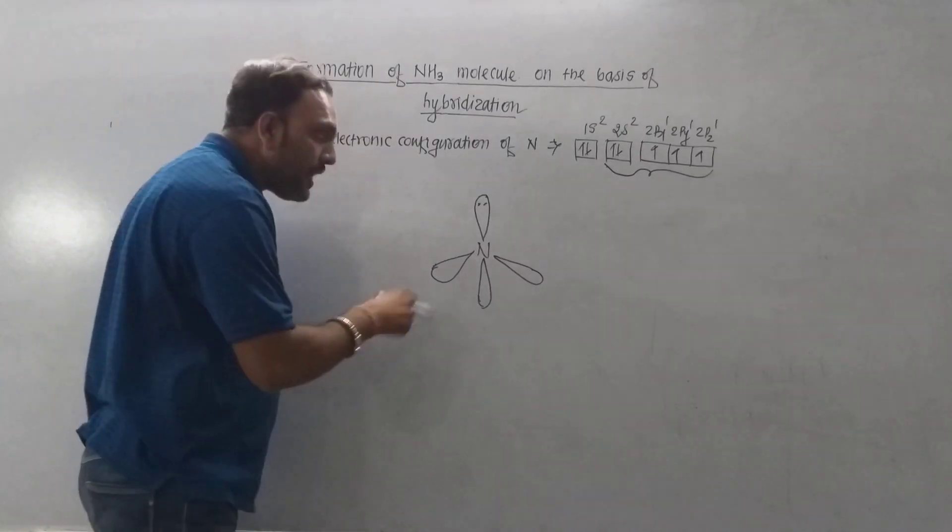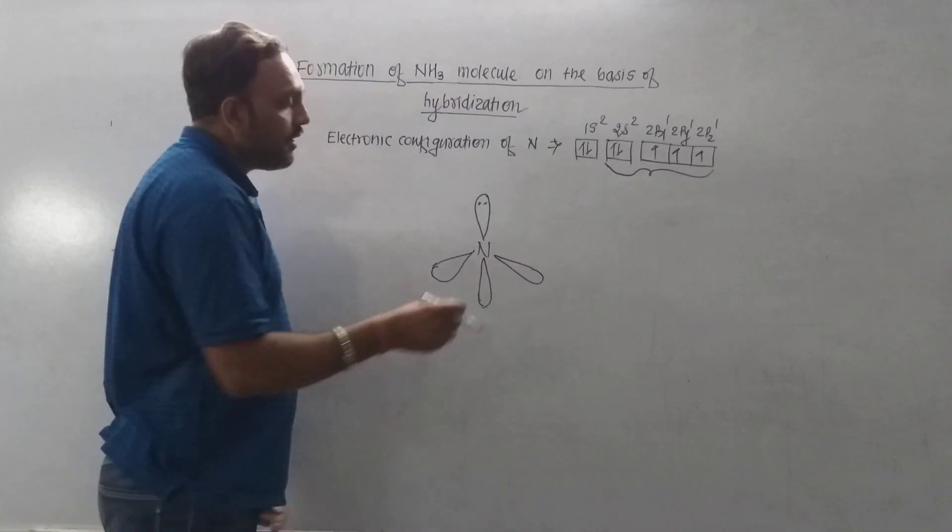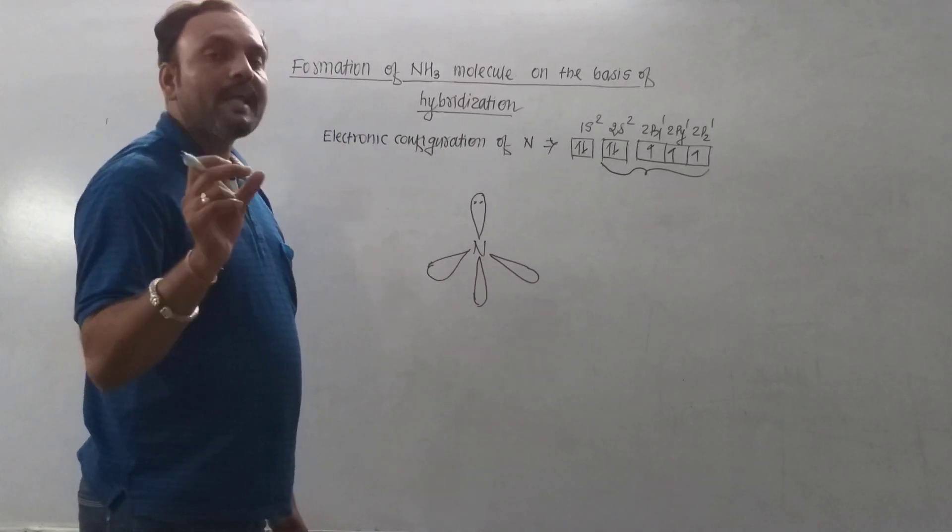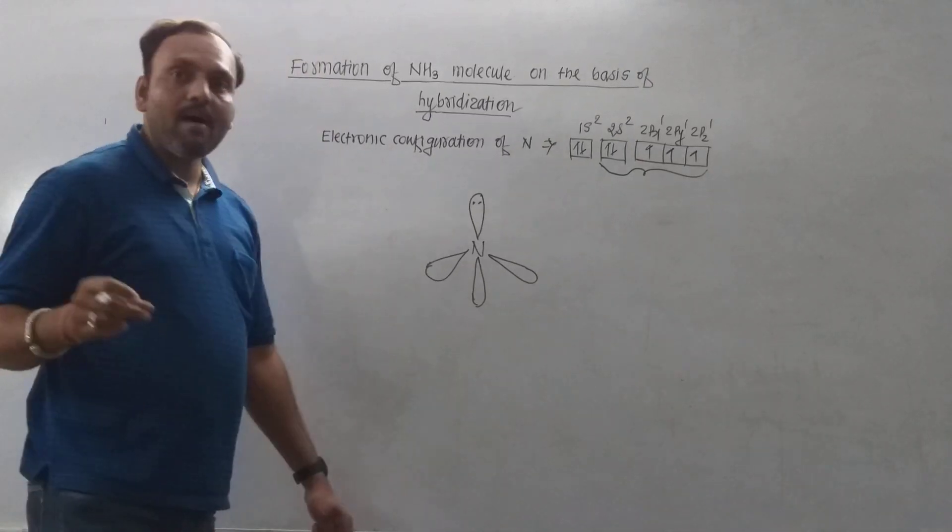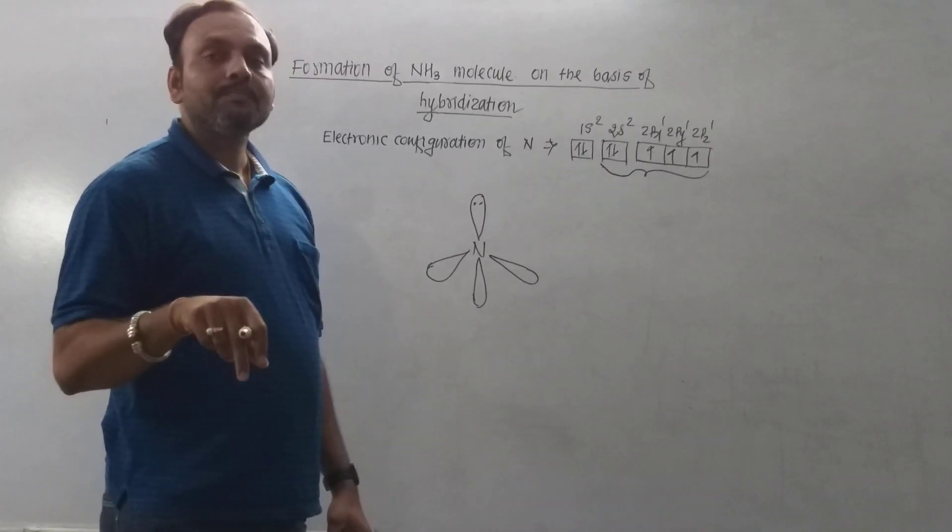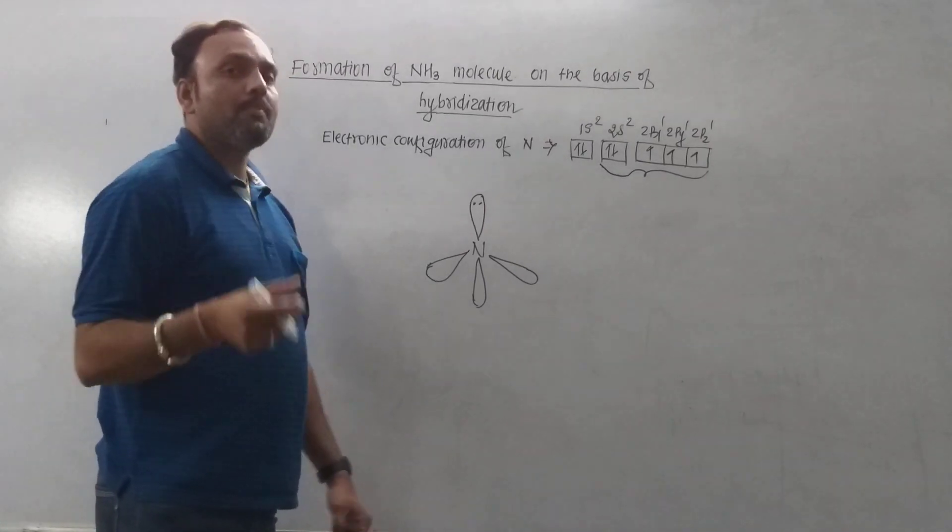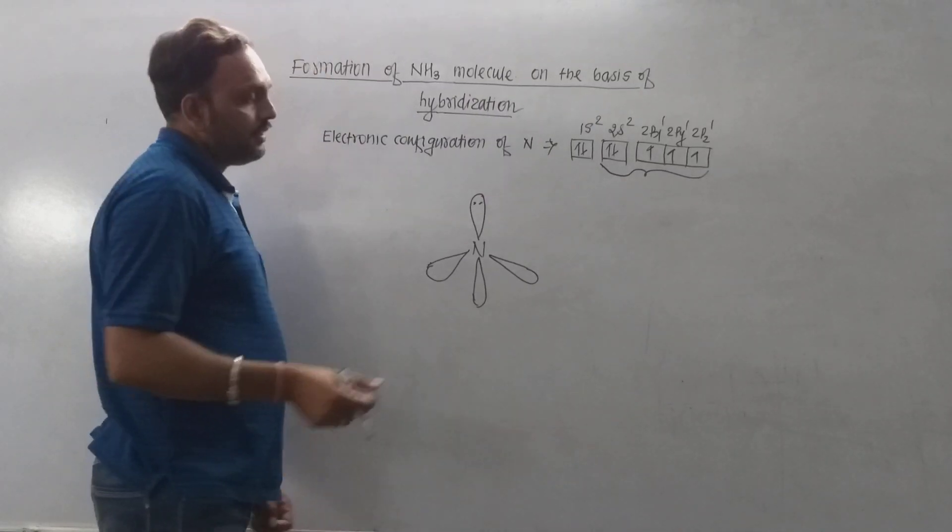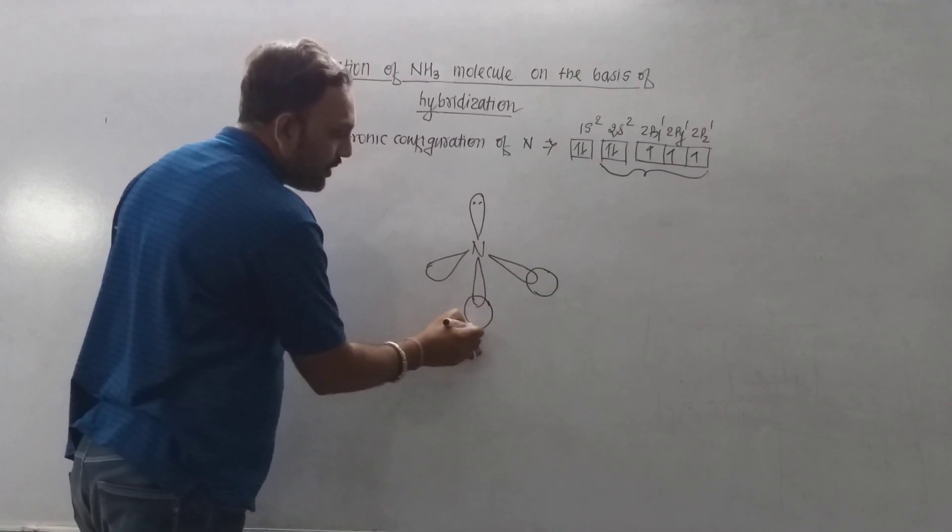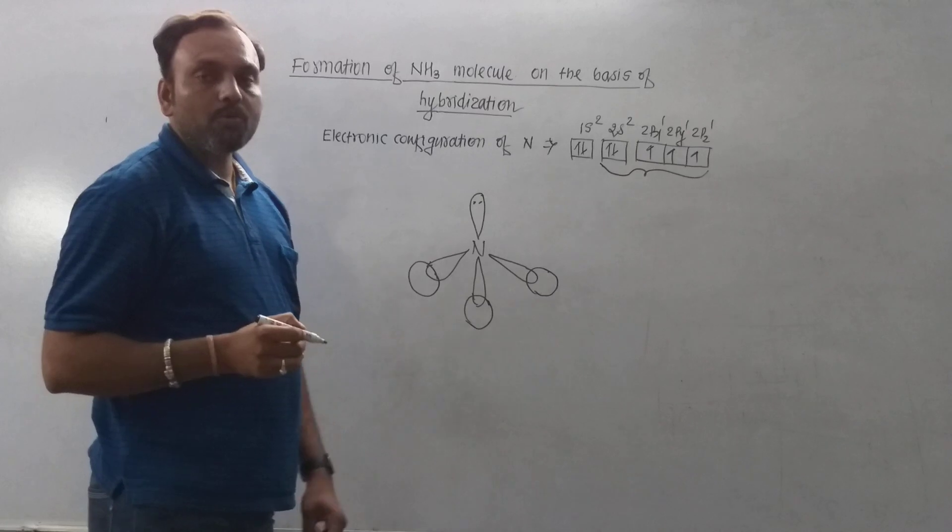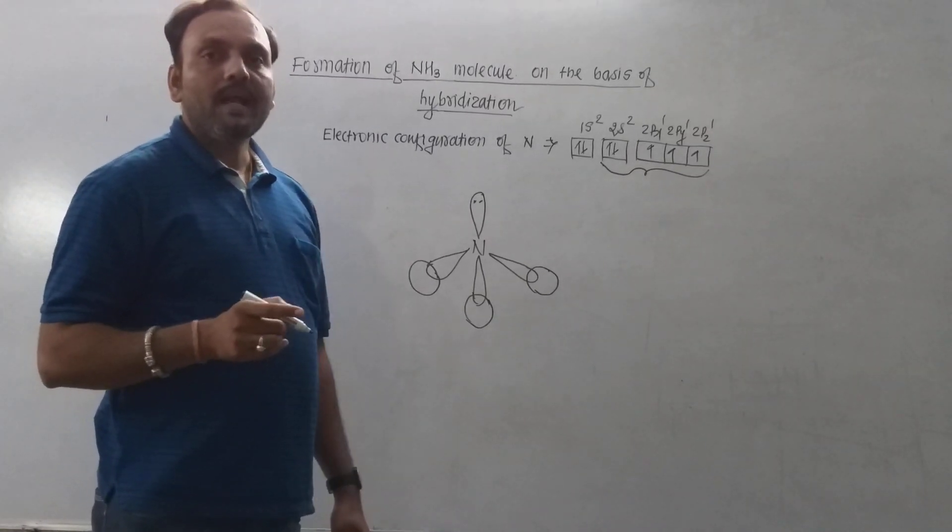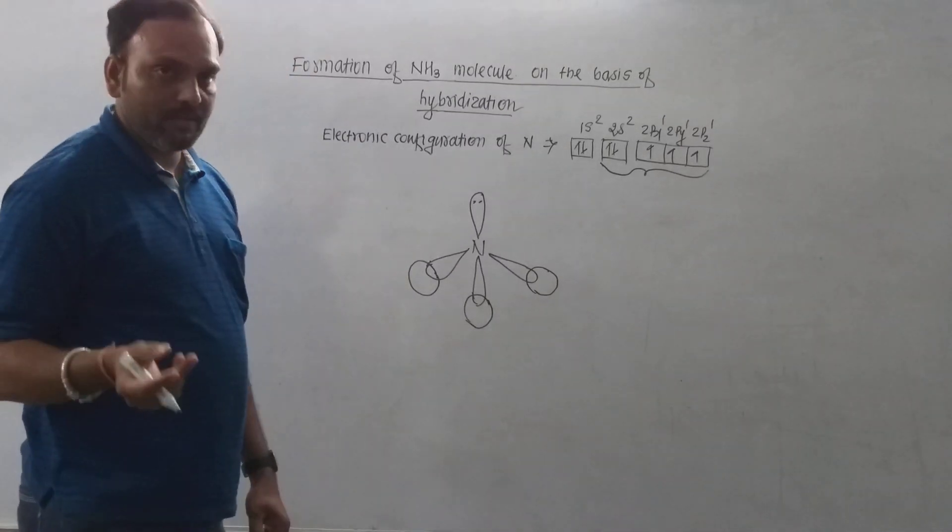The remaining 3 sp³ hybrid orbitals having unpaired electrons undergo overlap and take part in bond formation. 3 hydrogen atoms, with their 1s orbitals having unpaired electrons, overlap with the sp³ hybrid orbitals of nitrogen, which leads to the formation of 3 N-H bonds and hence ammonia molecule is formed.